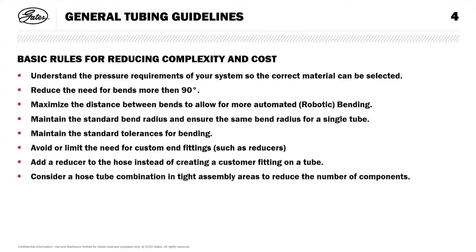Maintain the standard tolerances for bending — don't make the tolerances too tight, as it's very hard to achieve and takes much longer to set the machinery. Avoid the use of special end fittings; try to use just standard fittings. Use a reducer on the hose instead of creating a custom fitting for the tube. Consider hose-tube combinations in tight assemblies to reduce the number of components.